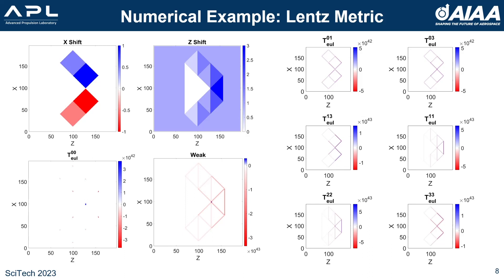Therefore, the Lentz metric will need additional modification to meet the criteria of the weak energy condition. This is one example where Warp Factory serves as a useful tool for analyzing complicated metrics to reveal important aspects of their physicality.